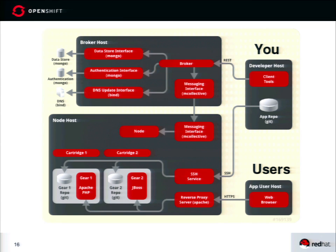We also host it online, so if you just want to try it out — openshift.com — you can get three free gears today and deploy Drupal for free, essentially forever. Then there are plans like Silver, Bronze, and Titanium that you can pay for as you grow. We've tried to create a flexible environment from small development projects all the way up to production quality. OpenShift Online currently has over 1.5 million applications running, and it runs on AWS, OpenStack, bare metal, with CentOS, Fedora, and RHEL.